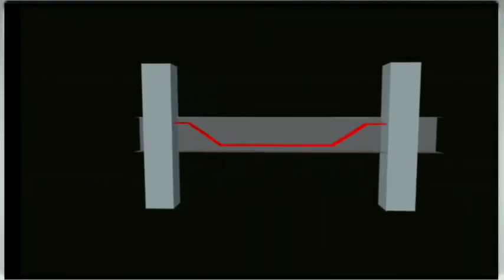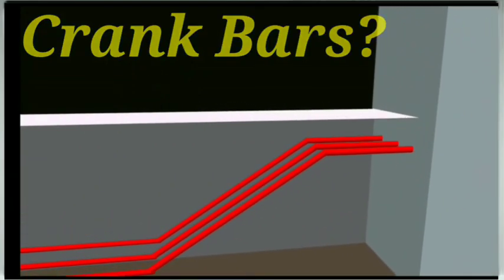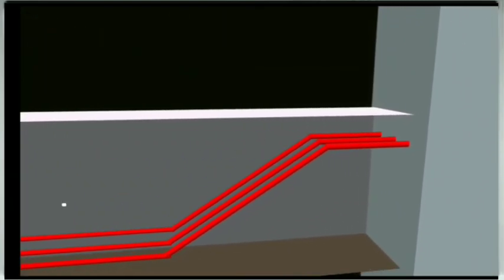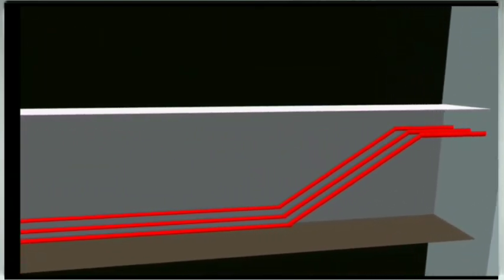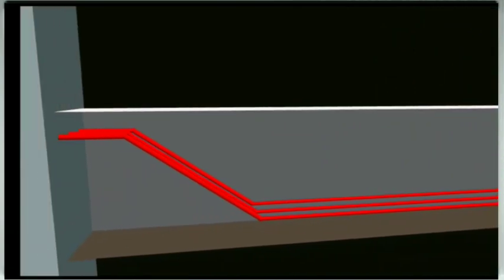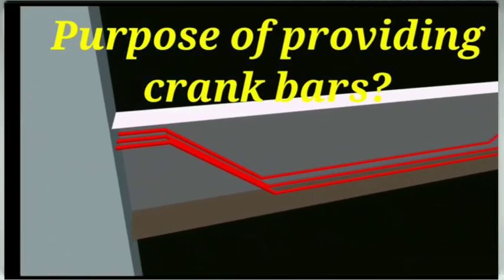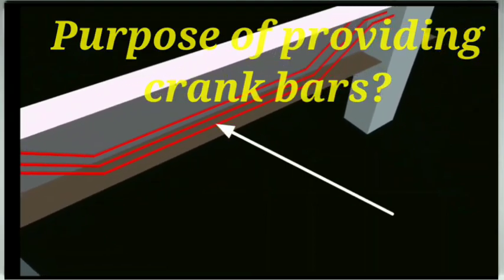In this tutorial I am going to discuss about crank bars which you can clearly see in this animation. Those red color bars which are commonly known as bent up bars. I am also going to discuss the purpose of providing these bent up bars in rectangular beams.